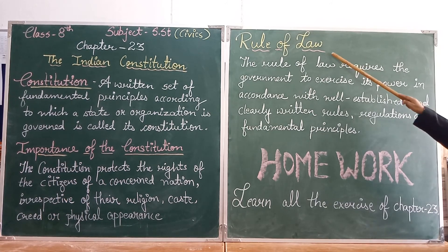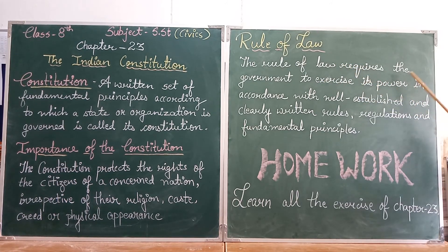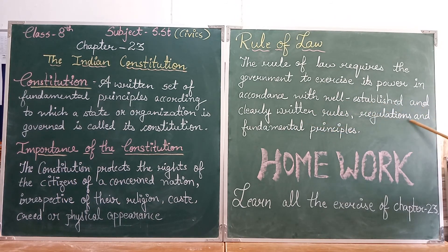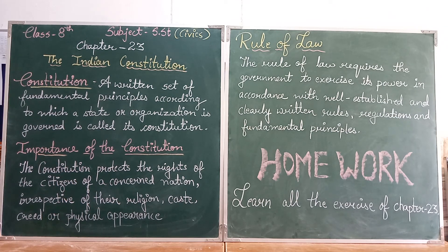The last topic of our chapter is rule of law. The rule of law requires the government to exercise its power in accordance with well-established and clearly written rules, regulations, and fundamental principles. The rule of law will always prevail. A rule has to be followed by the people willingly or unwillingly. The rule of law implies that no one is above the law.